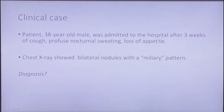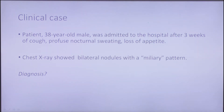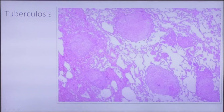Here is another clinical case. A 38-year-old male was admitted to the hospital after three weeks of cough, profuse nocturnal sweating, and loss of appetite. Chest X-ray showed bilateral nodules with a miliary pattern. One of the first diagnoses you should think about in such a case is of course tuberculosis. This is how tuberculosis looks under the microscope — we see tuberculosis granulomas with rounded outlines and discrete borders.